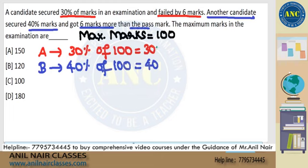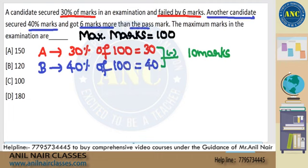Now, according to my assumption, I got 30 marks and my friend got 40 marks. The difference between my friend and me is 10 marks. According to my assumption, the difference is 10 marks.